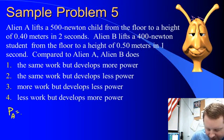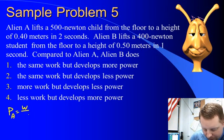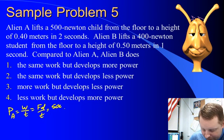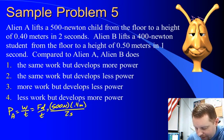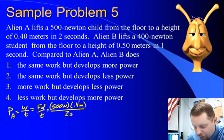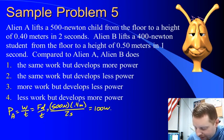the power of Alien A is going to be work over time, or force times displacement over time. That's 500 newtons times our displacement 0.4 meters in 2 seconds. 500 times 0.4, that's going to give us 200 joules over 2 seconds, or 100 watts, but it did 200 joules of work.